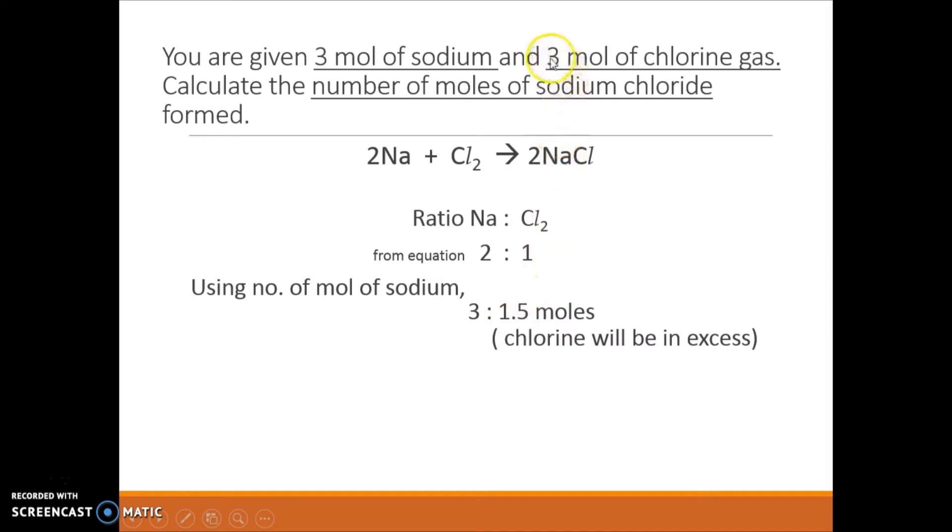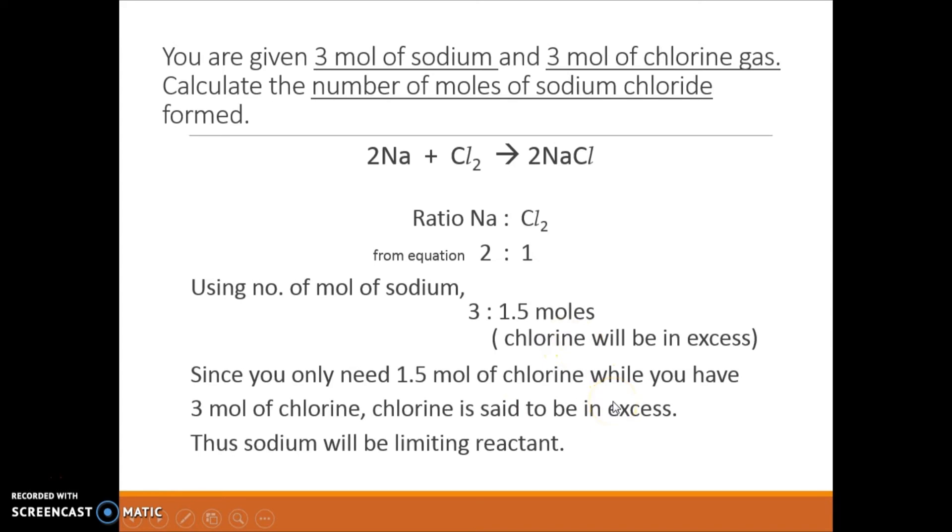But look at how many moles of chlorine you are given. You are given 3 moles of chlorine. Since 3 moles of chlorine is given and you only need 1.5 moles of chlorine, chlorine is said to be excess. As such, sodium will be the limiting reactant.